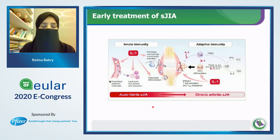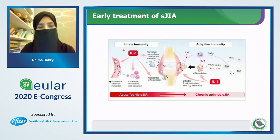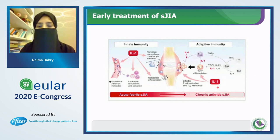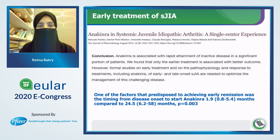In the early phase of acute systemic JIA, innate immunity plays the cardinal role, with IL-1 and IL-6 as the major cytokines leading to its manifestations. It was hypothesized that early treatment with anti-IL-1 and IL-6 blockers in the early phase of the disease will lead to a better response than in those with chronic arthritis. At this point, additional medications may sometimes be needed for better response.